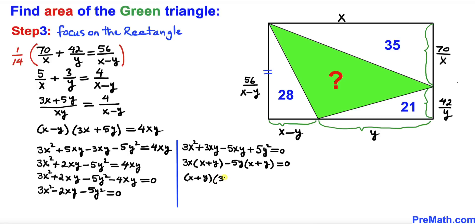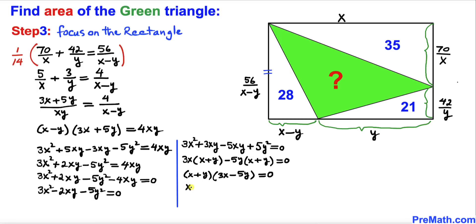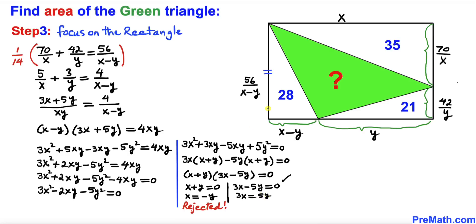Separating the factors: x plus y equals 0 gives x equals negative y, which is not physically viable so we reject it. Focusing on the other factor: 3x minus 5y equals 0, which gives us 3x equals 5y.